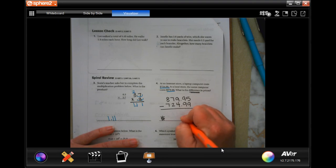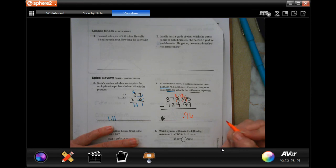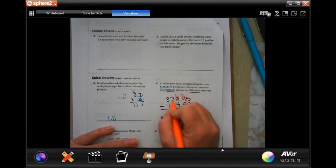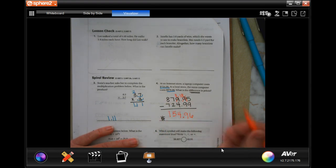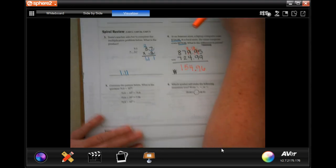So I'm going to drop my decimal first. 5 cannot take away 9. So I'm going to borrow 1, making that 15. 15 take away 9 is 6. 8 cannot take away 9. So I need to borrow 1 again, making that 18. 18 take away 9 is 9. 8 minus 4 is 4. 7 minus 2 is 5. And 8 minus 7 is 1. $154.96.